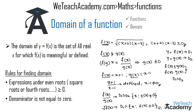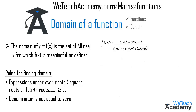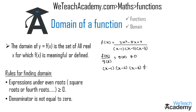Let us explain this with an example. We have f(x) = (2x²-5x+7) / ((x-1)(x-2)(x-3)). This function is in the form f(x)/g(x) and is defined only when the denominator g(x) ≠ 0. So we require (x-1)(x-2)(x-3) ≠ 0.